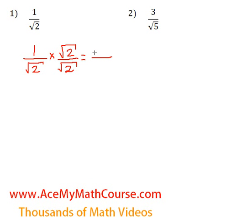So, 1 times the square root of 2 is just the square root of 2. And down below, we have the square root of 2 times the square root of 2, which is the square root of 4. Marvelous. Okay, so we end up with the square root of 2 all over the square root of 4 is just 2. And that is our answer. The denominator has been rationalized. Fantastic.